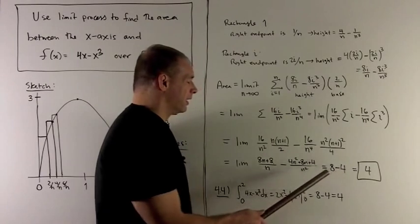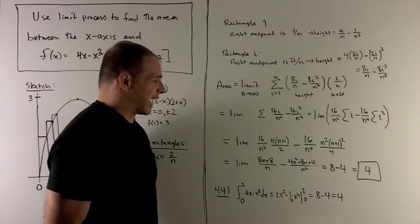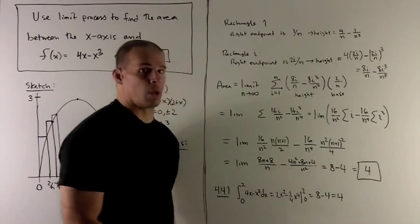I subtract the 4 off. So my answer is going to be for this area, 8 minus 4, which is equal to 4.